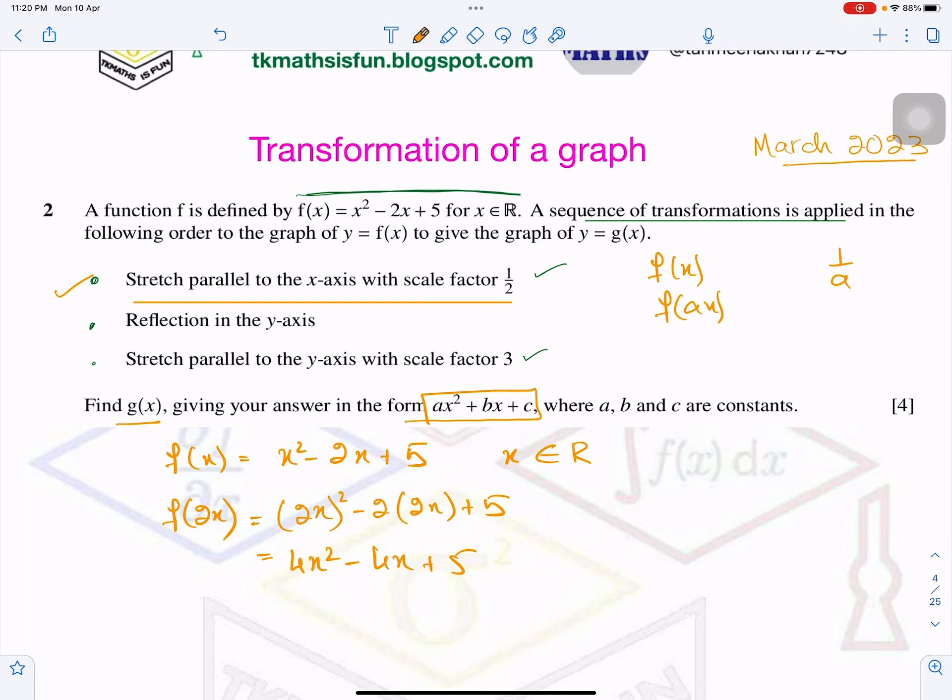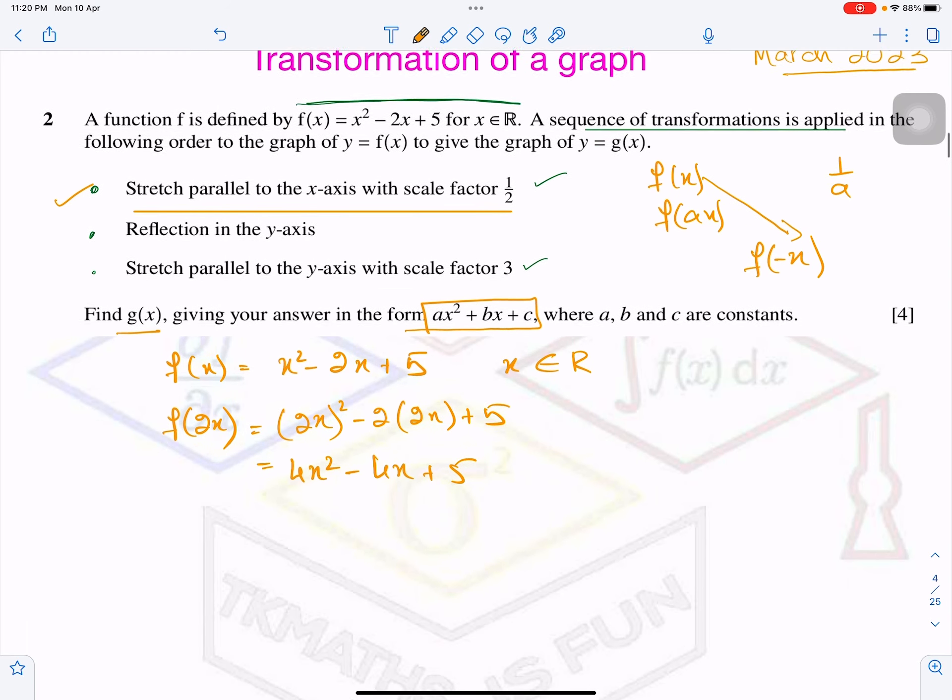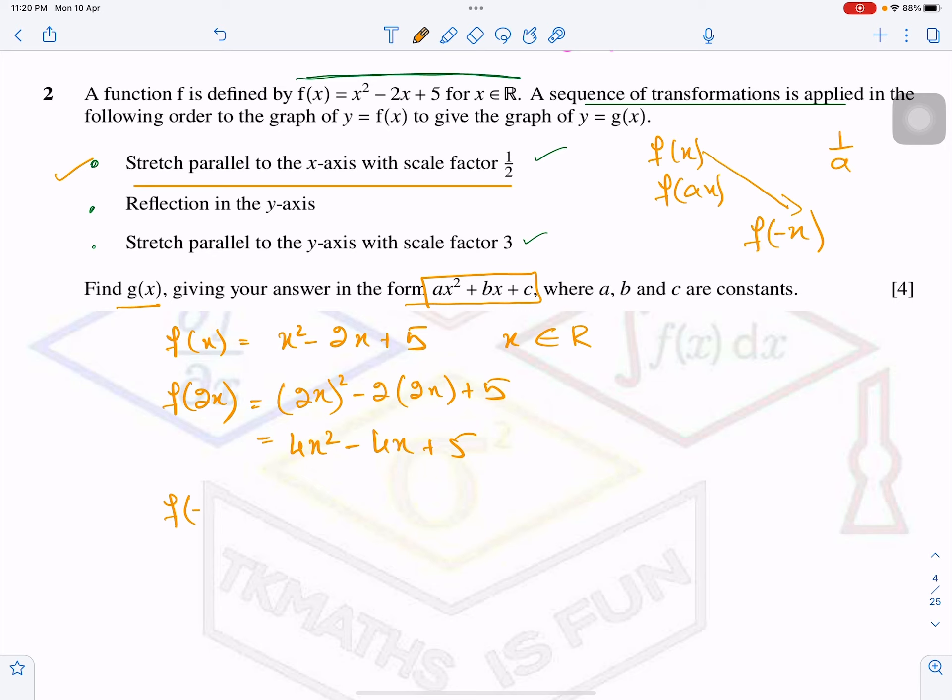Now reflection in the y-axis. So do you remember what does it mean? It means in your original function f(x), you will do like this. This means reflection in the y-axis. So now what will I do? In the same graph, I will write minus 2x instead of this. So this was my f(2x), 2x. So now I will just write down minus in place of plus x. So now it will become 4x squared plus 4x plus 5. So now you have done reflection in the y-axis.